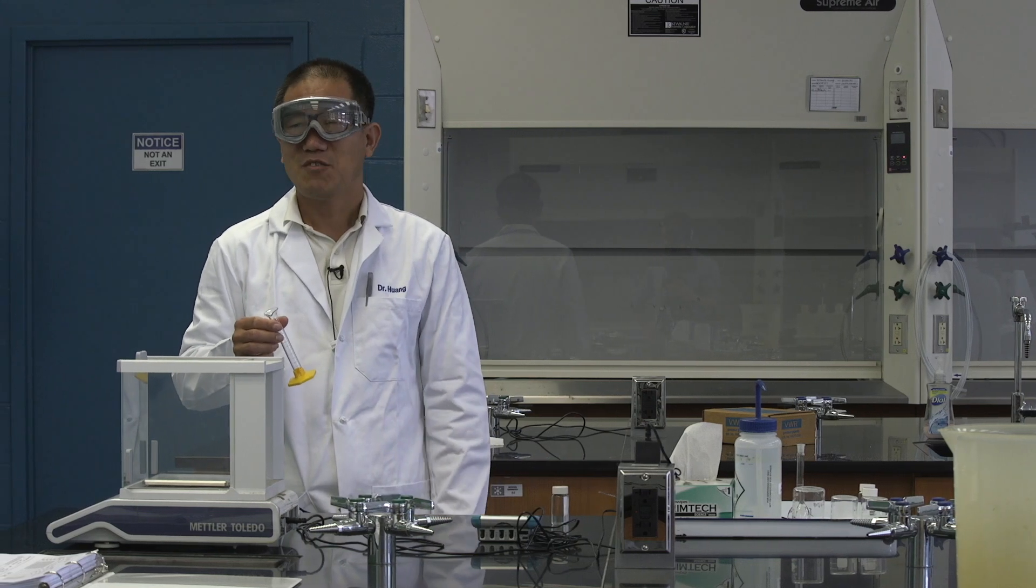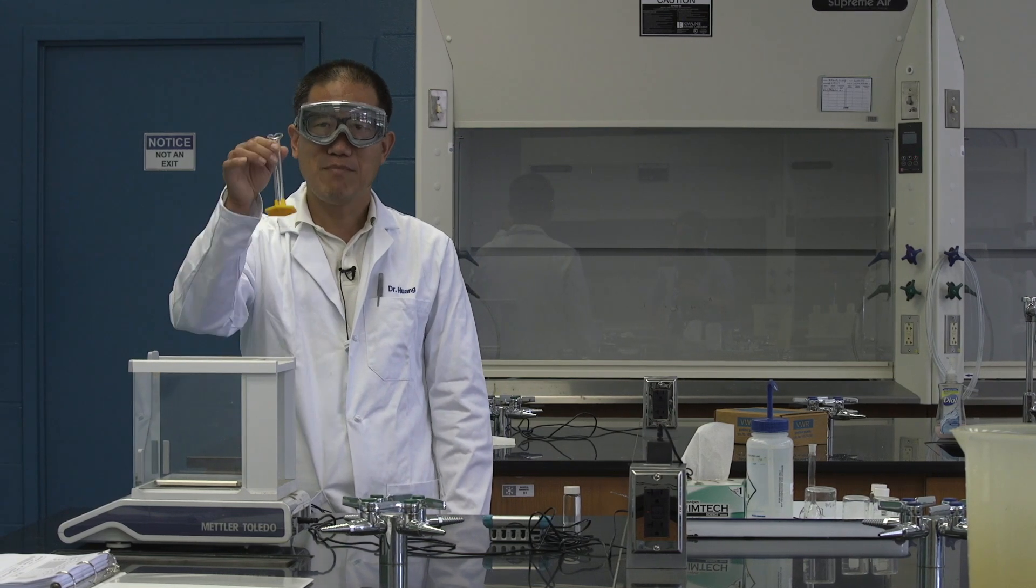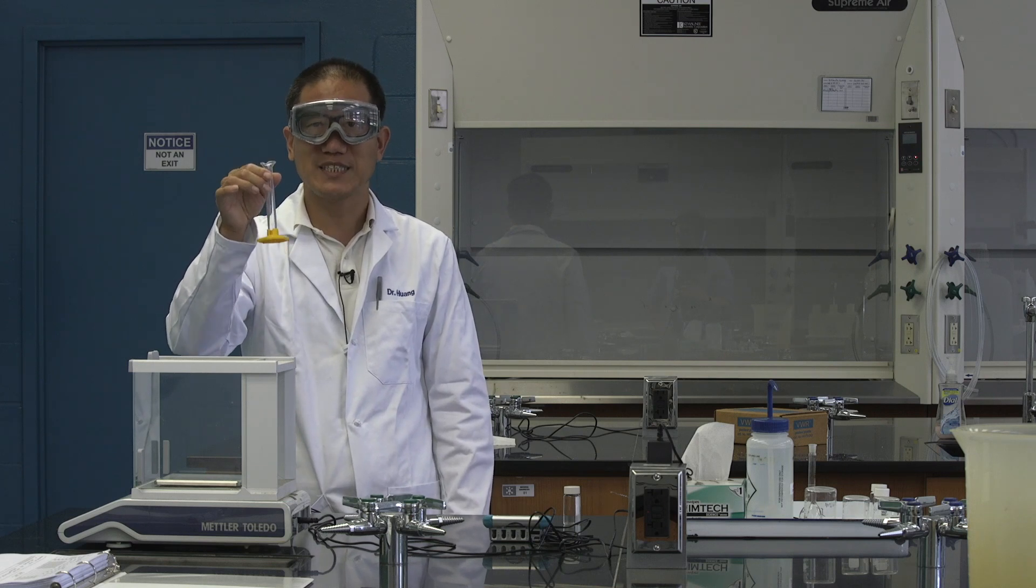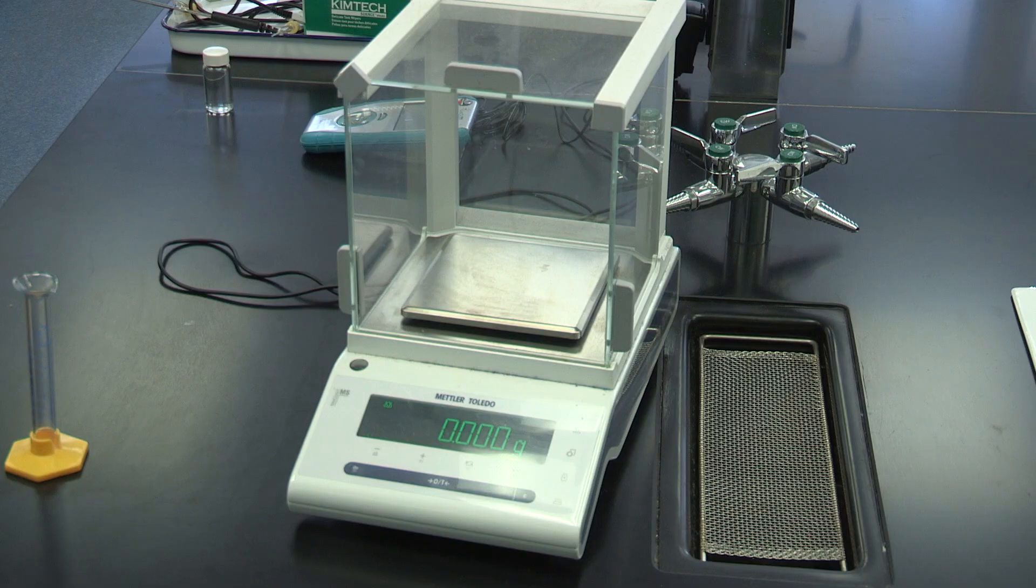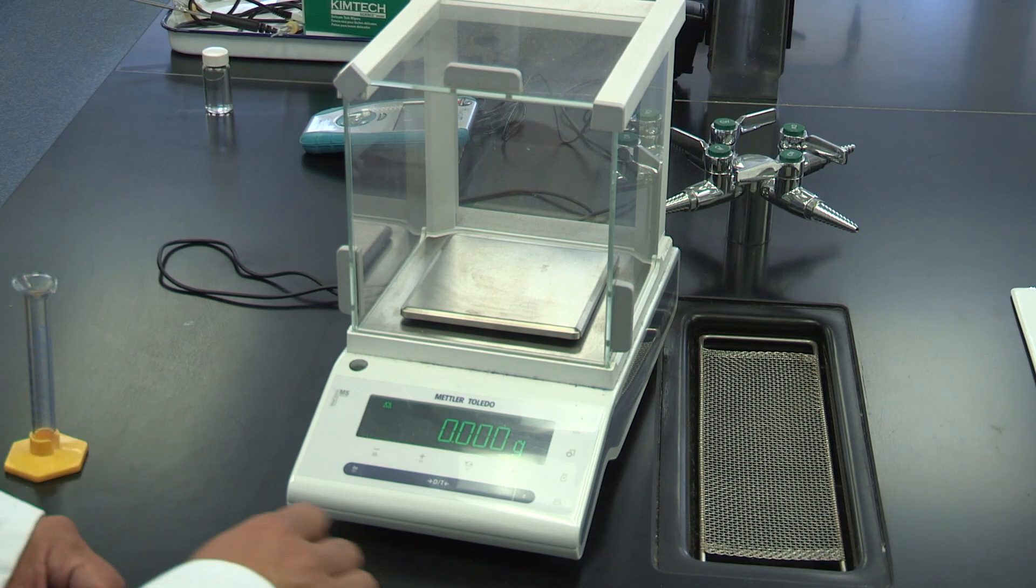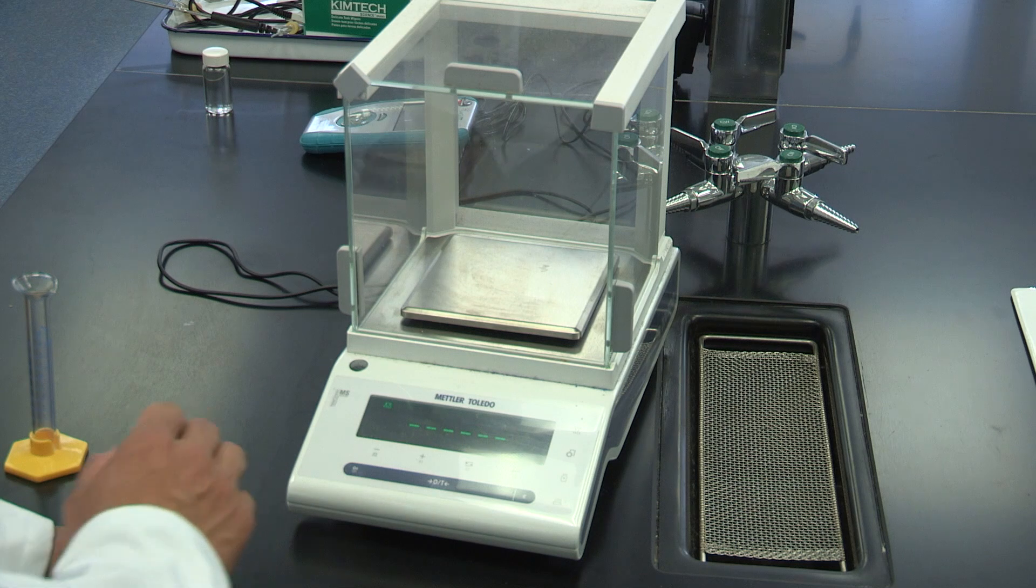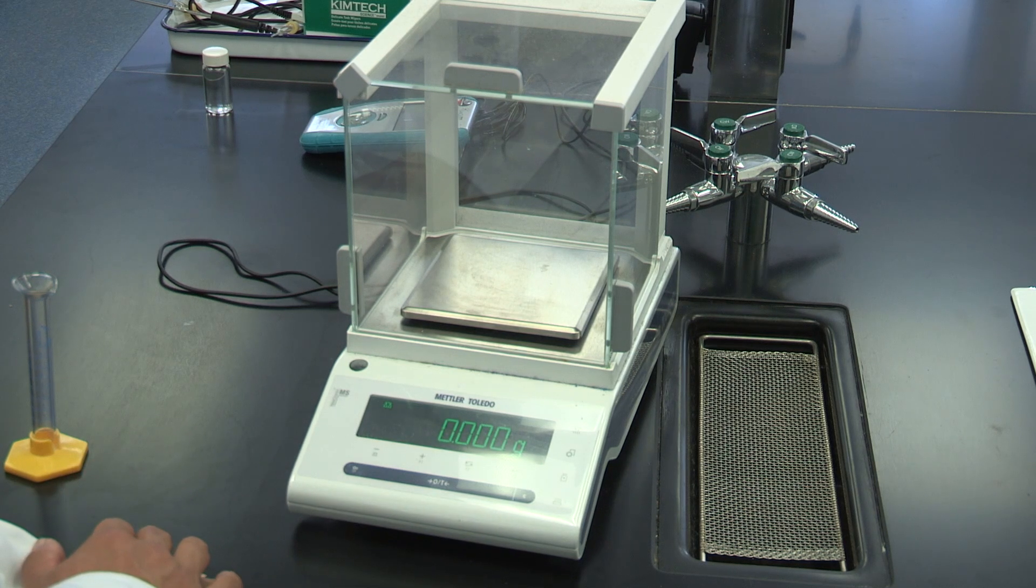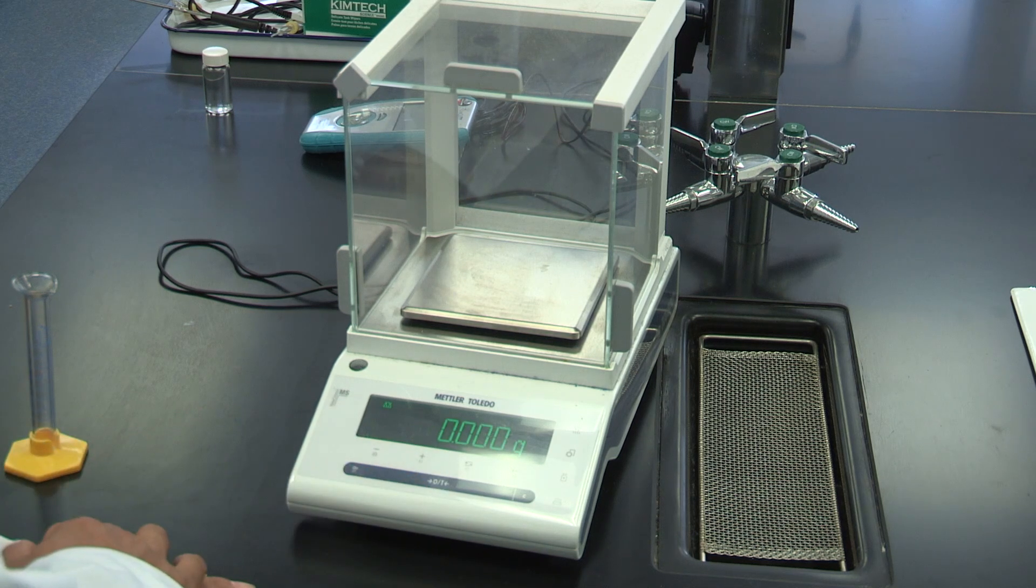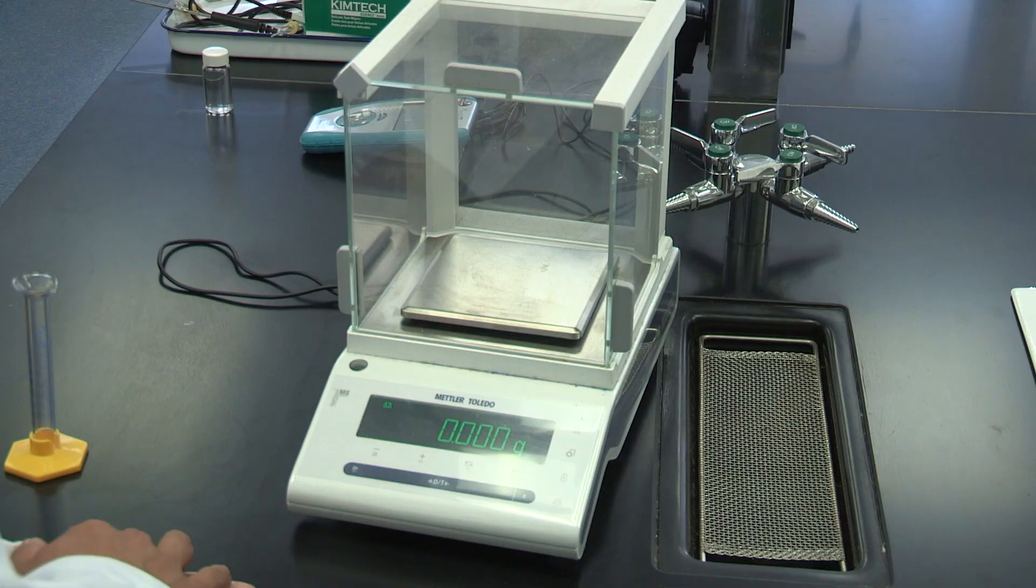What we do next is we have to determine the mass of the empty graduated cylinder. Make sure you have to do this in the first step. This is the electronic balance. Make sure if it is not on, press the button on the left. If the reading is not 0.000 grams, you press the button in the center. If the last digit is 1 or 2, that's fine.